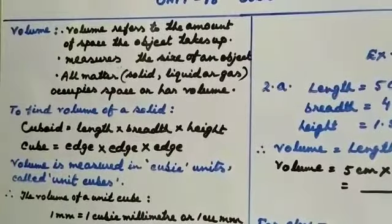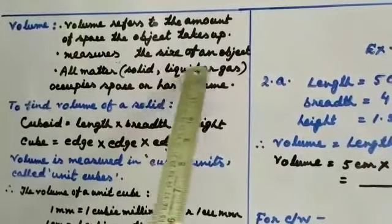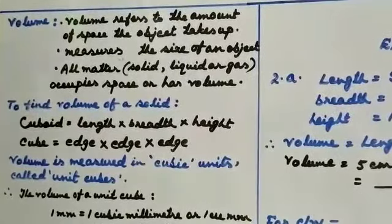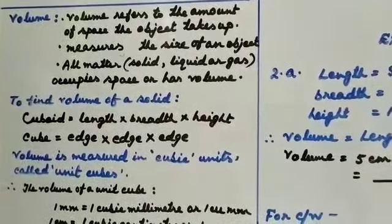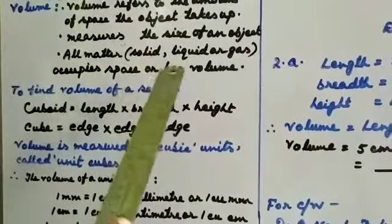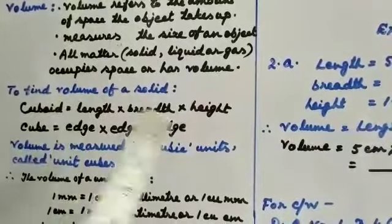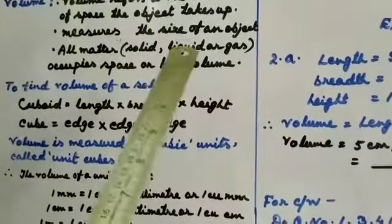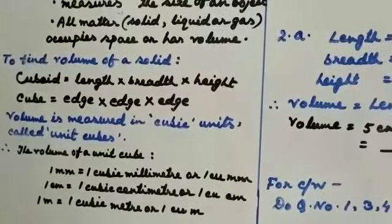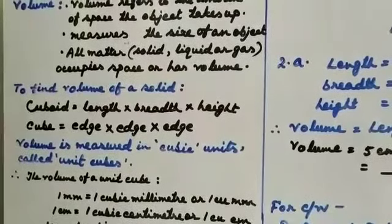So how can you find the volume? You have to measure the size of an object — that means its length, its height, its breadth. All matter — solid, liquid, and gas — occupies space and has volume. In maths, volume is the amount of space in a certain 3D object.